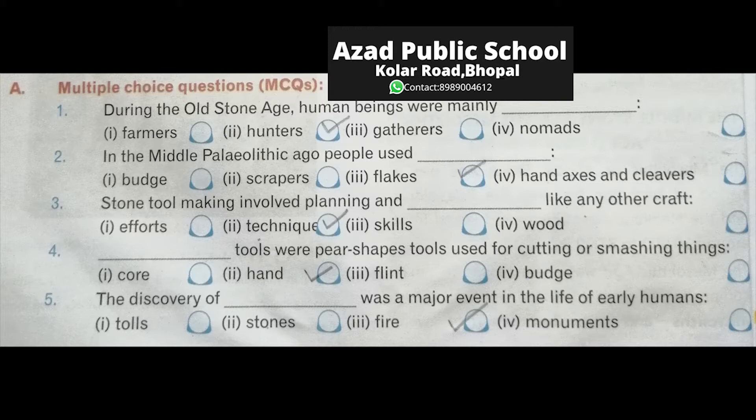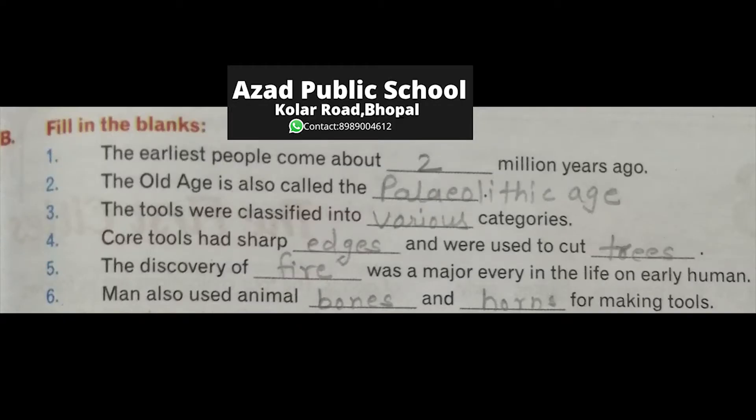Fire — the discovery of fire was very important. Fill in the blanks: the earliest people came about blank million years ago. They came 2 million years ago — 2 million saal pehle aaye the.